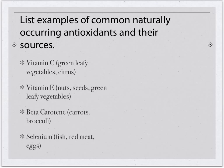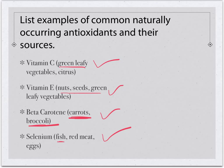Some naturally occurring antioxidants include vitamin C, vitamin E, beta-carotene, and selenium. Vitamin C can be found in citrus fruits and green leafy vegetables. Vitamin E is found in nut seeds and green leafy vegetables. Beta-carotene is found in carrots and broccoli. Selenium can be found in fish, red meat, and eggs. These are the naturally occurring antioxidants and their sources.